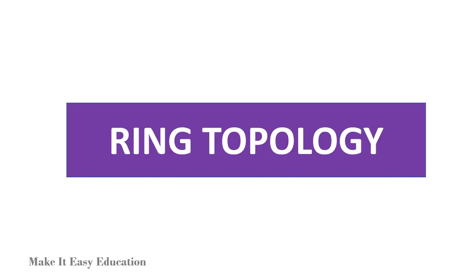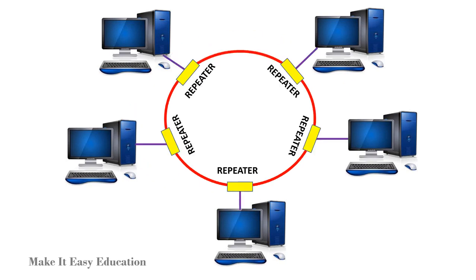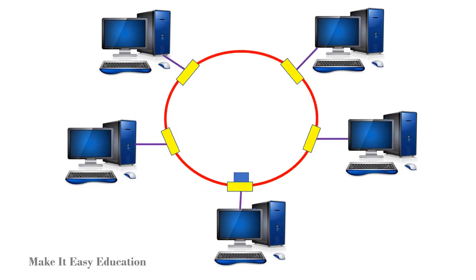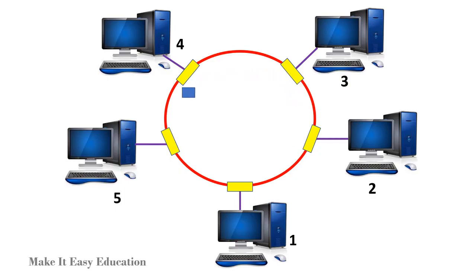Ring topology. In ring topology, each device is connected with the two devices on either side of it. This structure forms a ring, thus it is known as ring topology. Each device in ring topology has a repeater. If a device wants to send data to another device, it sends the data in one direction. For example, if device 1 wants to send data to device 5, it first sends the data to device 2. If the received data is intended for another device, the repeater forwards this data until device 5 receives it.